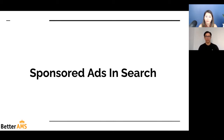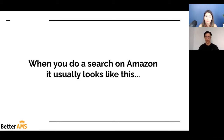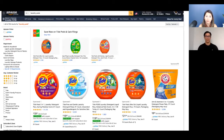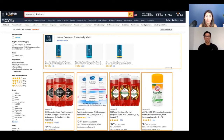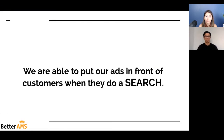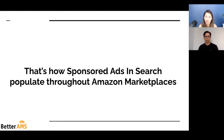Let's first talk about sponsored ads in search. When you do a search on Amazon, you get products popping up. But what you might not know is that all of what you just saw — it's ads. You do a search and the first impression you get, it's all ads. There's a type of ad at the top and four different ads at the bottom. It's amazing that we're able to put our ads in front of customers when they do a search, because even if a product is new or doesn't have reviews, we're able to place an ad, and depending on price and strategy, the product is likely to convert.